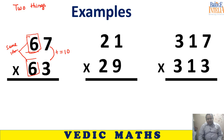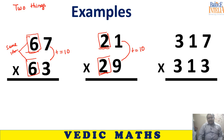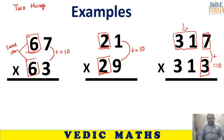Second example: 21 multiplied by 29. Their last digits are 1 and 9, and 1 plus 9 equals 10. The remaining digits, 2 and 2, are identical. Third example: 317 multiplied with 313. Last digits 7 and 3 sum to 10, and the remaining digits — 31 in both numbers — are identical.